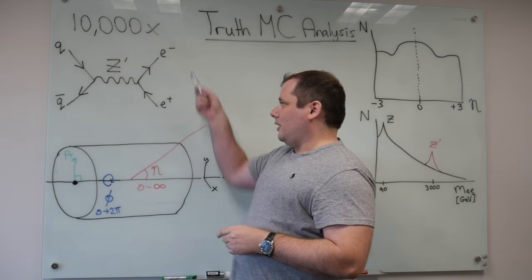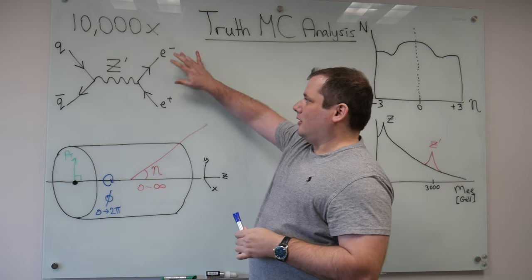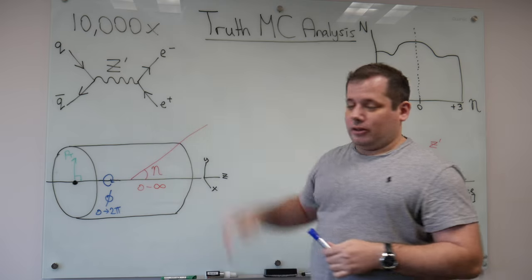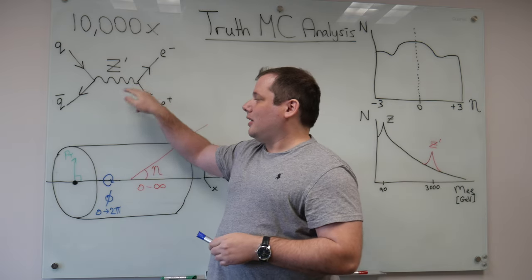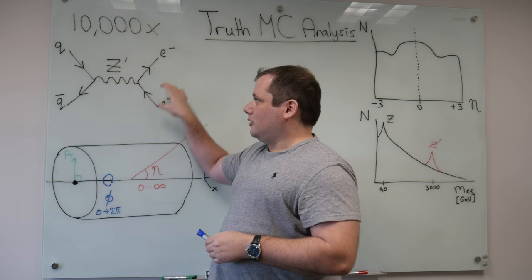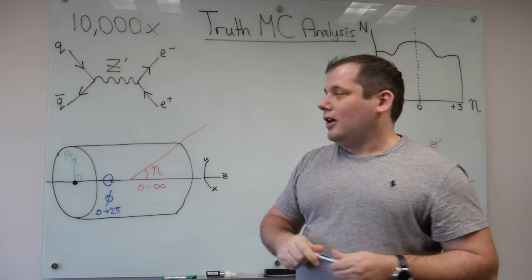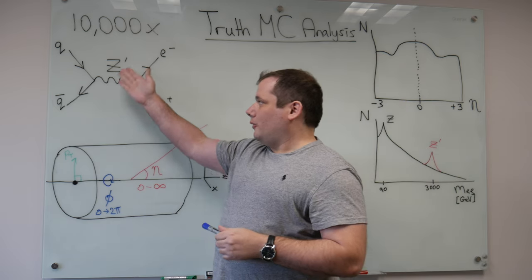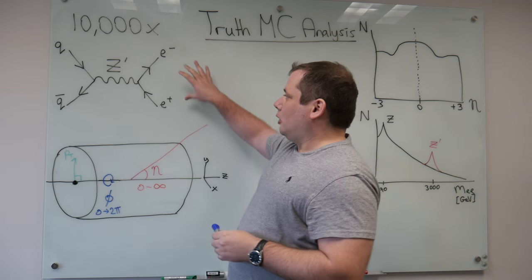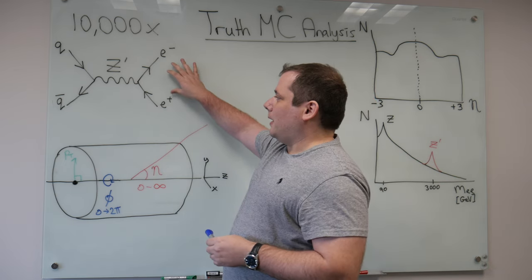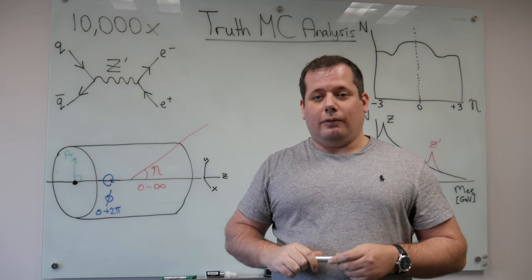Of course the masses of the electrons themselves are very small, but if you take the vectors that represent the electron and the positron in the event and you add them back together, you can work out what mass, from its energy and direction of these two, you can work out what mass the Z' would have had. And then this can give you, if you've generated the Z' like we did at a mass of 3 TeV, then you should find when you add these two particles back together that you get a Z' that has around a mass of 3 TeV.